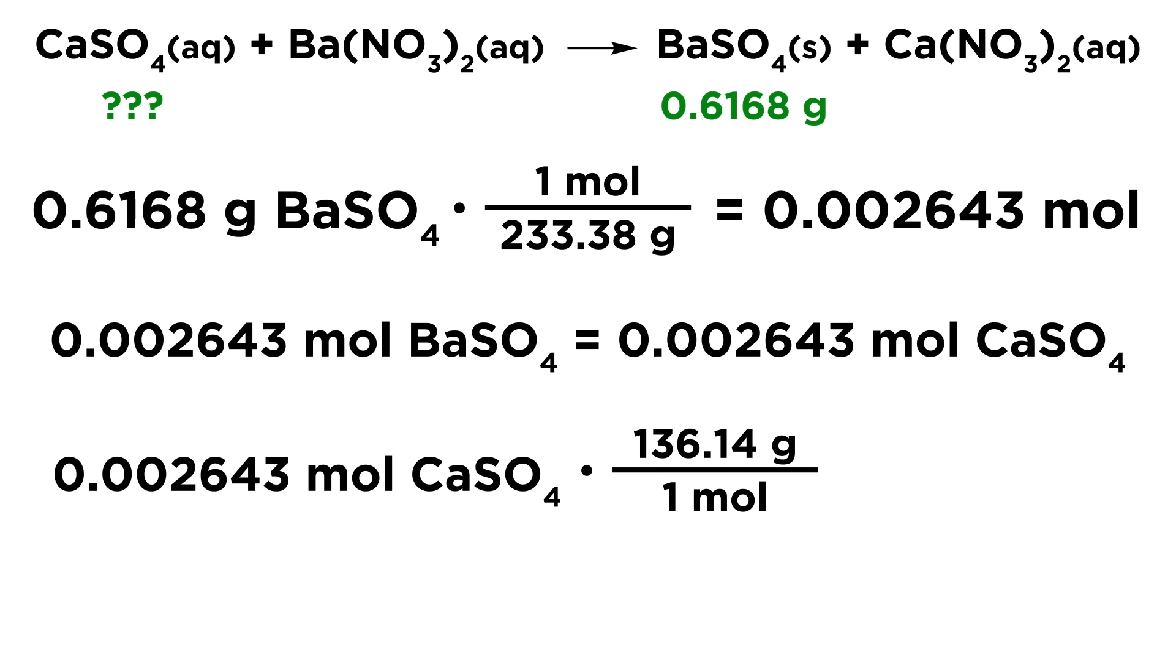So now all we have to do is convert that into a mass of calcium sulfate. So we're going to take 0.002643 moles of calcium sulfate and multiply that by 136.14 grams per mole. That is the molar mass of calcium sulfate. And we end up with 0.3598 grams of calcium sulfate.